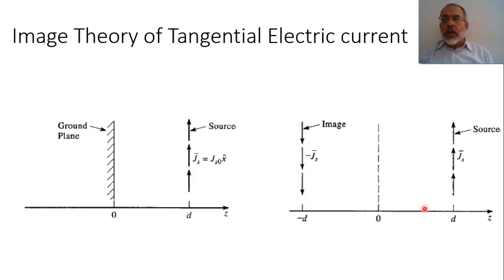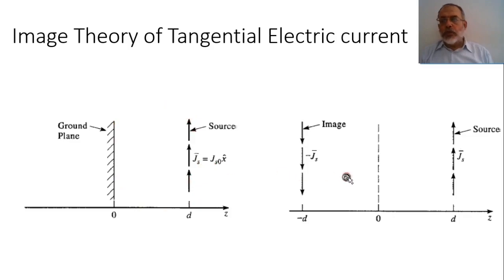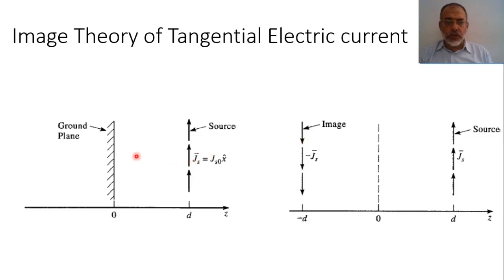So in terms of electric current, if I have an electric current moving in the positive x direction in front of a conducting plane, it is equivalent to two current sources: one positive, the original, and its image with negative current. This image is located at a distance minus d, where d is the distance of the original source from the conducting plane. In the case of a problem where I have a conducting plane and in front of it a parallel electric current source, I can replace this problem by two anti-parallel current sources — one j and one minus j — one located at distance d and one at minus d. The field due to this combination of the source and its image is the same as the field from the source with the ground plane. This is what is known as the image theory for tangential electric current.